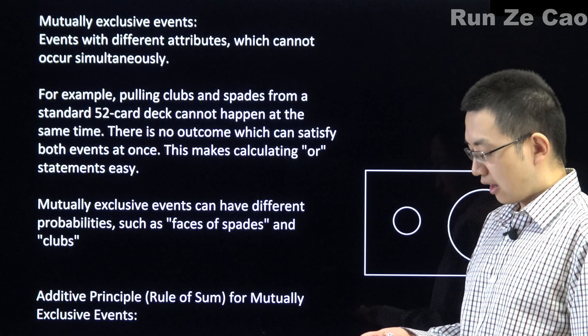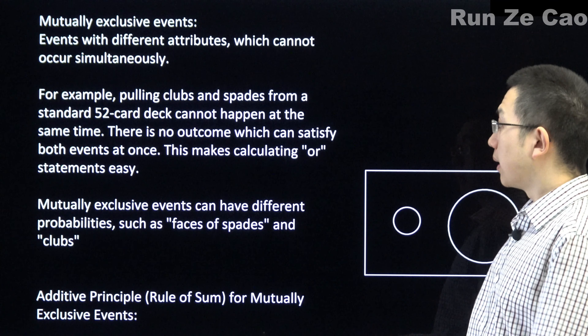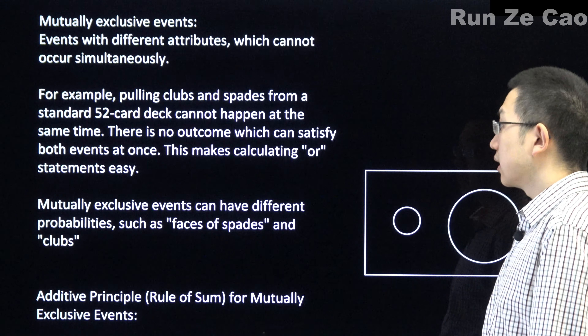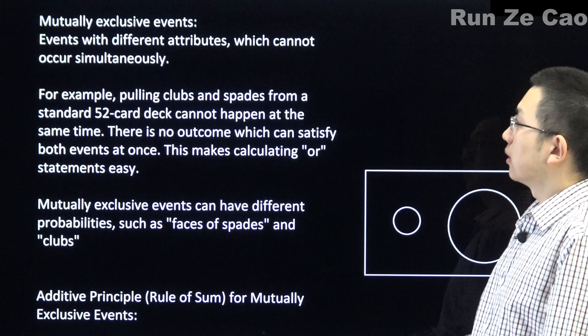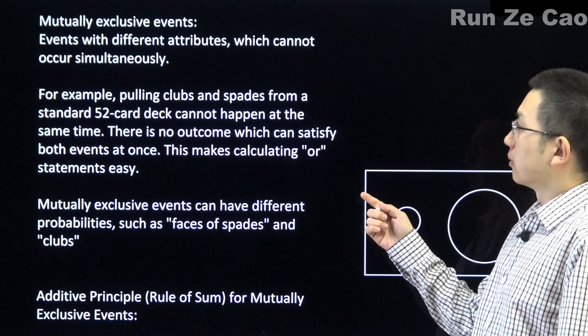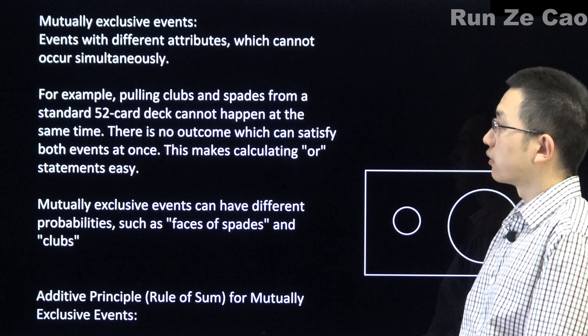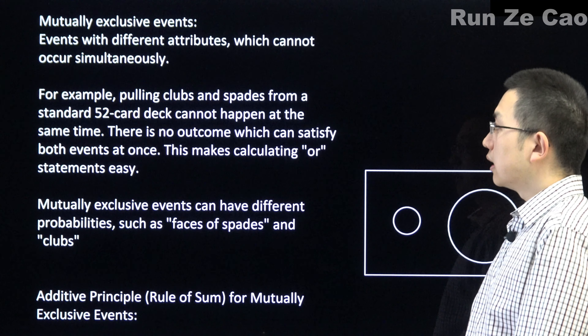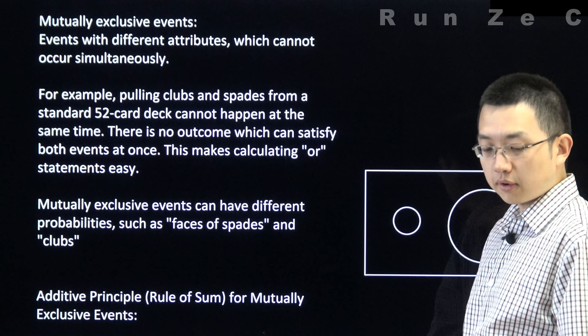Some events can't occur at the same time, such as rolling a dice and having it come up as a 1 and a 6 at the same time. That's not happening. However, it is possible that it comes up as a number divisible by 2 and divisible by 3 at the same time.